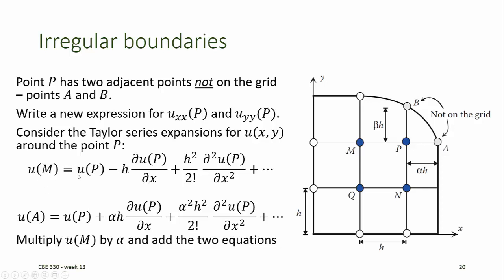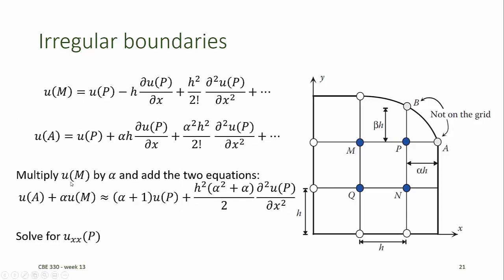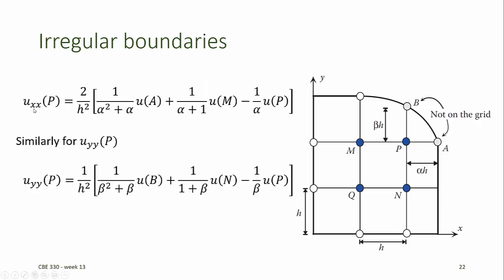We multiply our equation for u of m by alpha and add the two equations. This gives us an equation that we can solve to approximate the second partial derivative of u with respect to x at point p. Our finite difference equation for u_xx at point p then becomes an expression still related to the neighboring points a and m, albeit with different coefficients than the standard formulas. Similarly, for the derivative in the y-direction, we replace alpha with the fraction beta. In this way, we can handle irregularly shaped boundaries and still write finite difference equations.